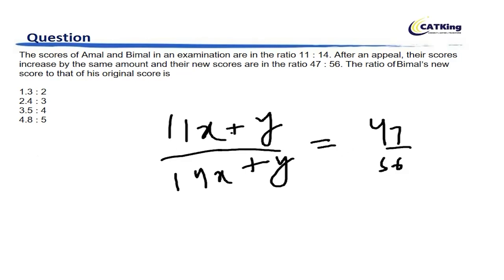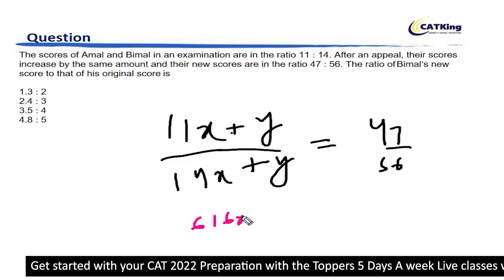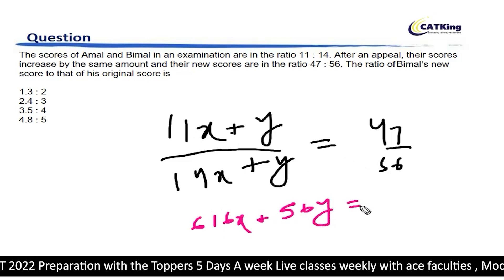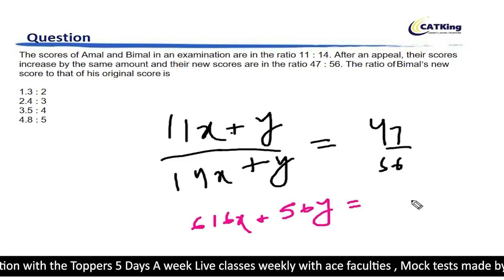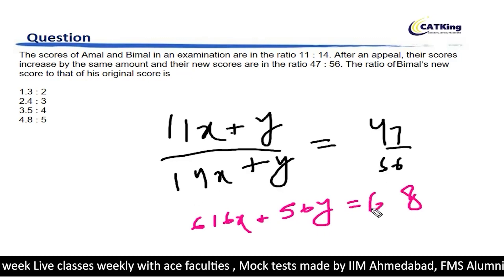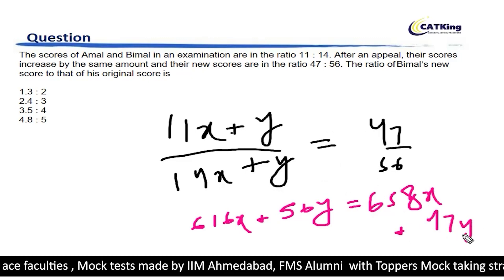Let's find this y. We'll do this a little quick to save time. So 11 into 56 becomes 616x plus 56y. 14 into 47 is 98, and 14 into 4 is 56, and 9 is 65. So 658x plus 47y.